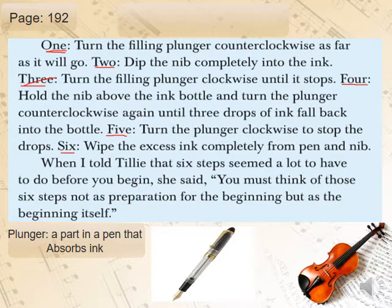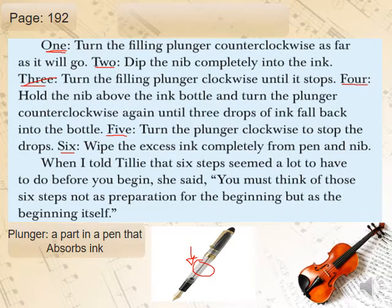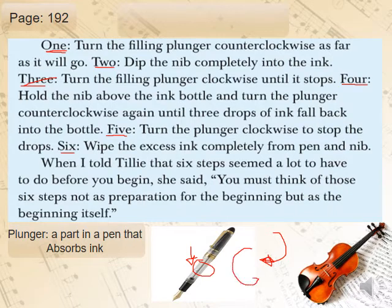Step six: wipe the excess ink completely from the pen and nib. The pen has a tube inside — when you dip the tube into the ink and press, the ink is absorbed up the tube. Clockwise means moving in this direction, and counterclockwise means moving the other way.